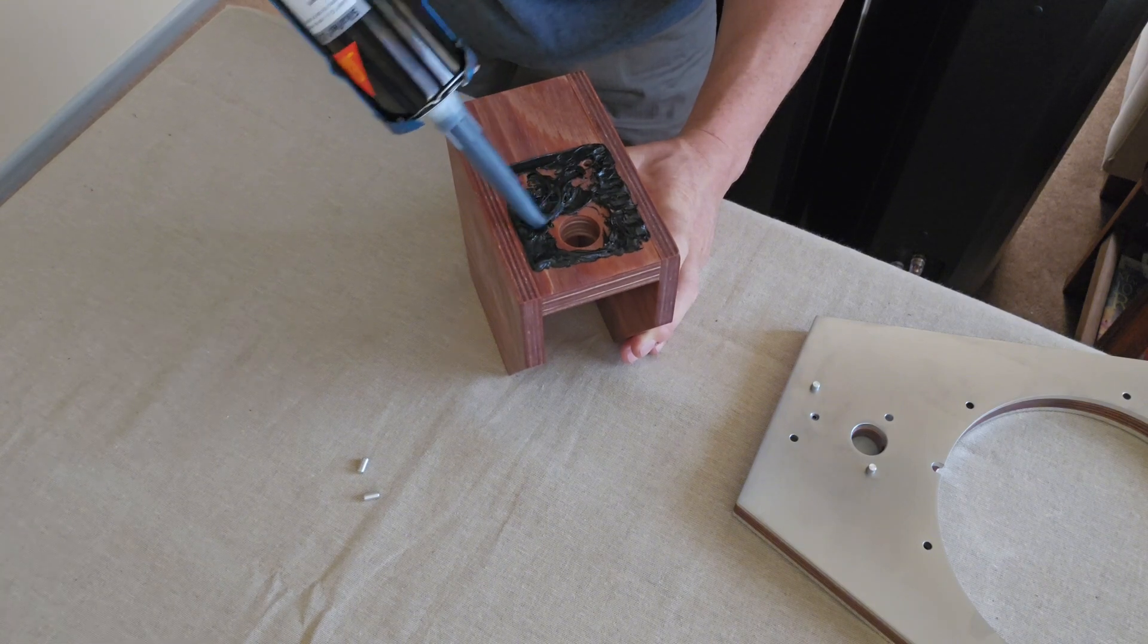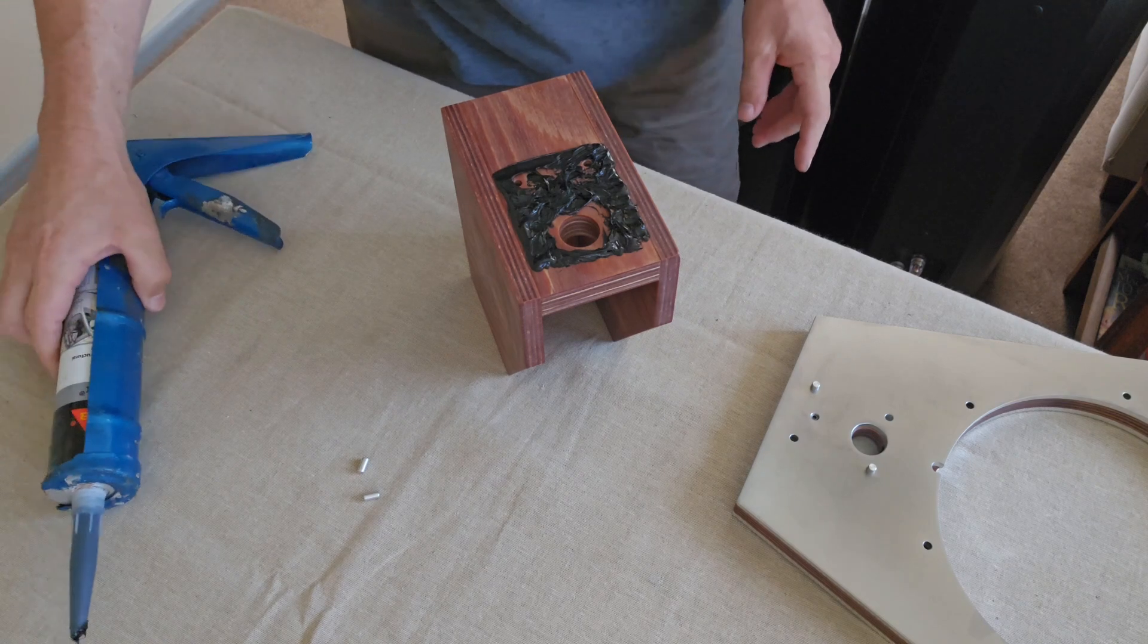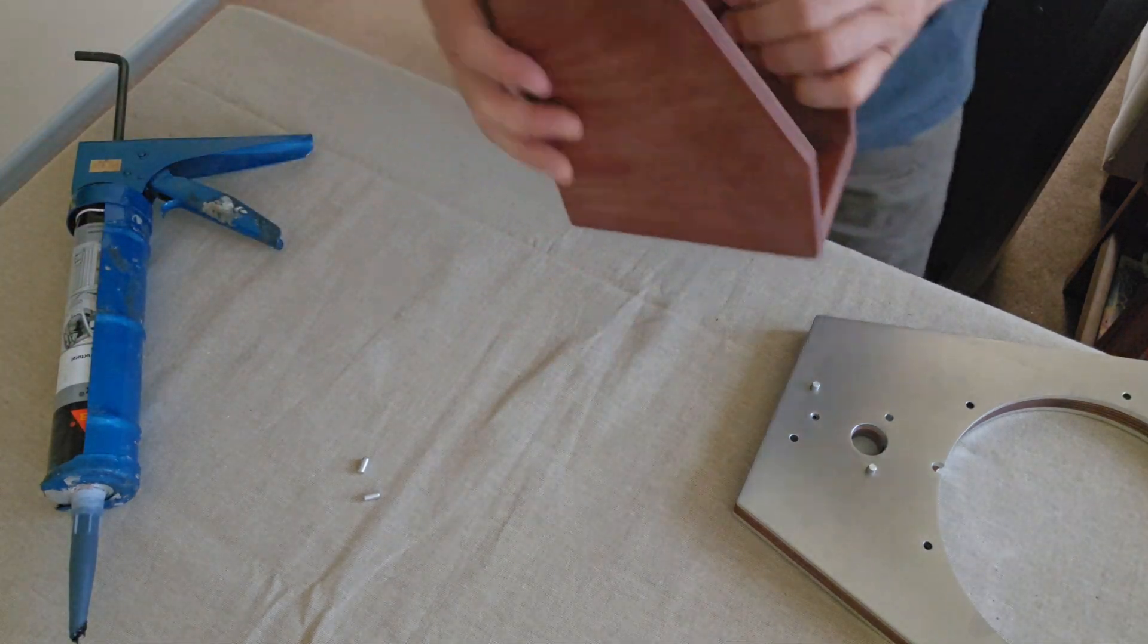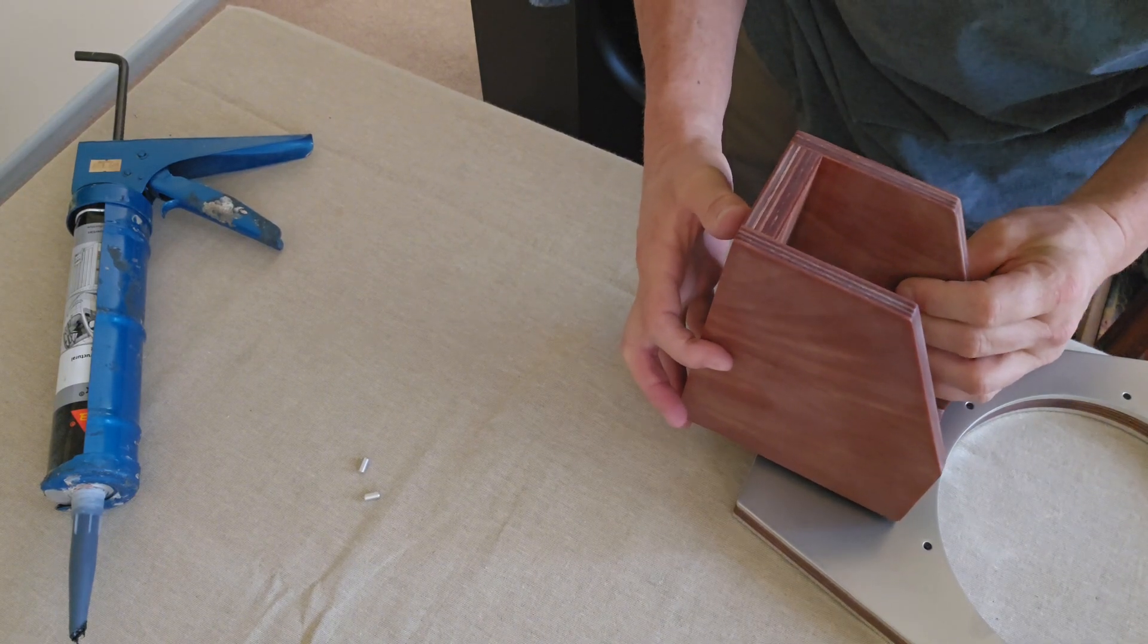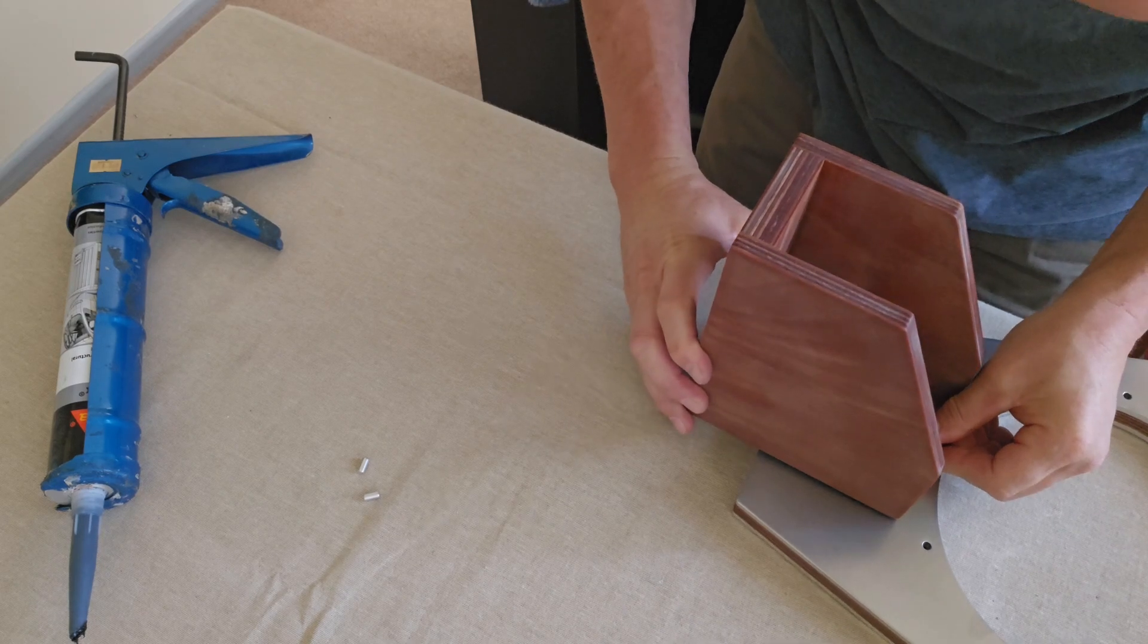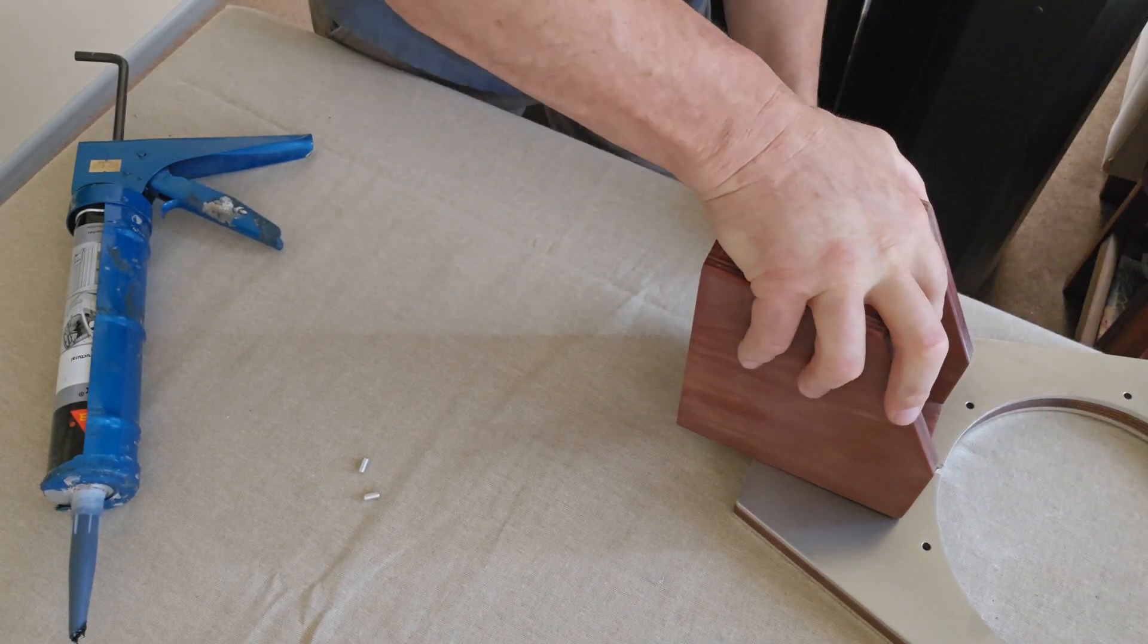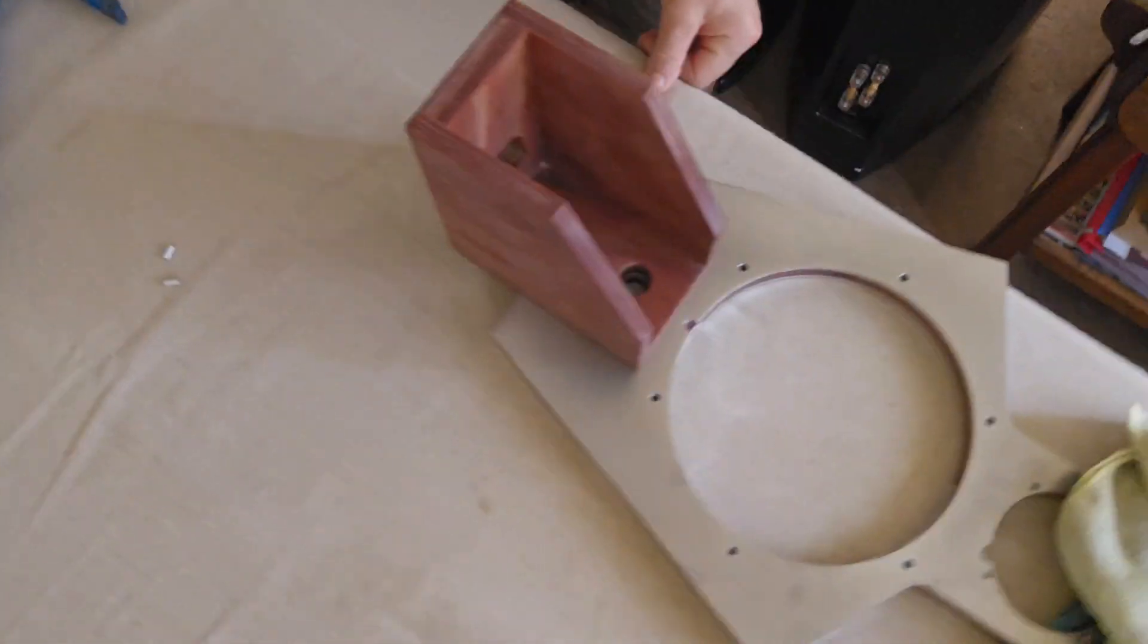So just by using the tip of the material, we've got a nice thin even smear. And then once we've got that there and we know where our position is, we just line our hole up here and the dowels will find their location.